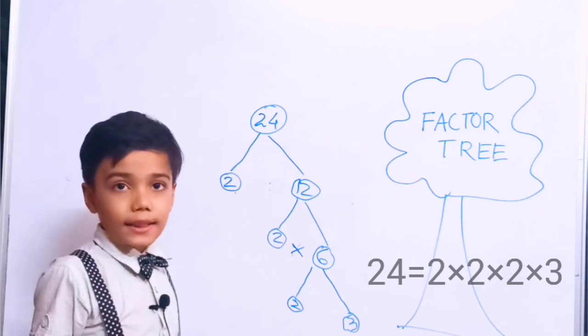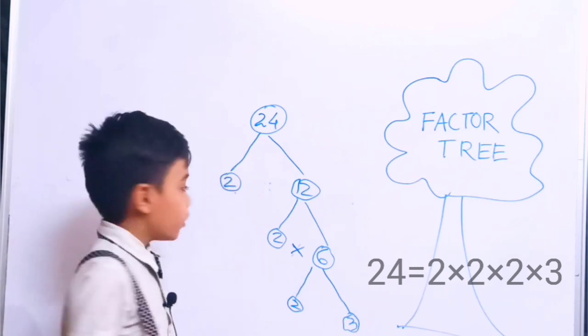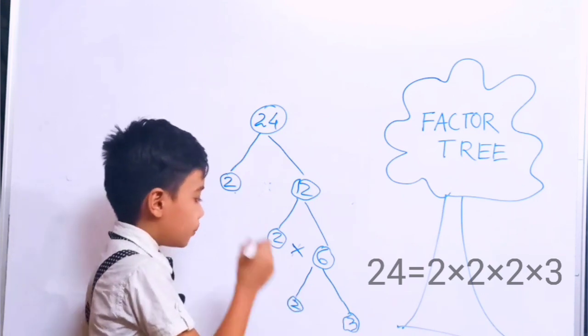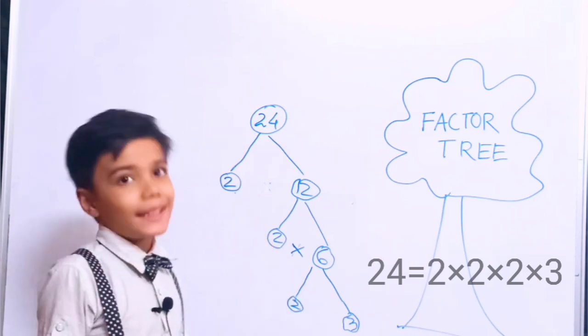Now, the prime factors of 24 is 2 by 2 by 2 by 3. We will again get 24.